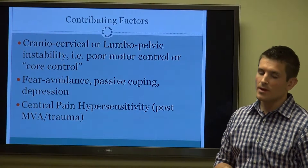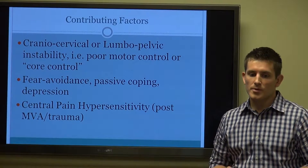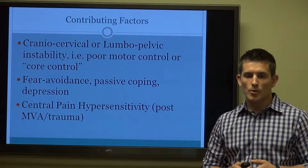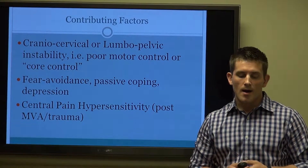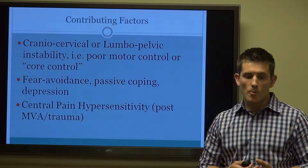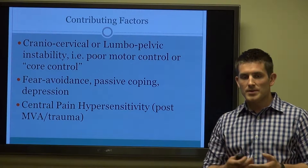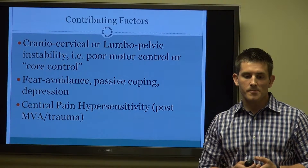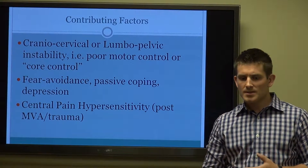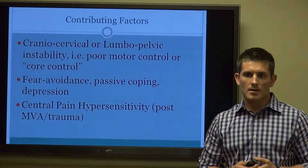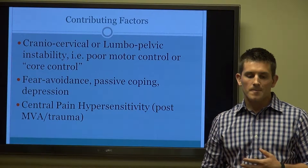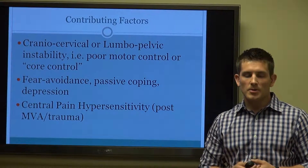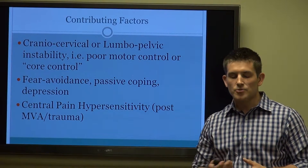The contributing factors — we talked about yellow flags. We're looking for cranial cervical or lumbopelvic instability, which is essentially just poor motor control or core control. We also look for things like fear of avoidance, passive coping, and depression. We usually find this out based on outcome assessments given to the patient prior to seeing them. Of course, central pain hypersensitivity — a topic that the research is still somewhat up in the air on — and we see this a lot with post-MVAs or major traumas.